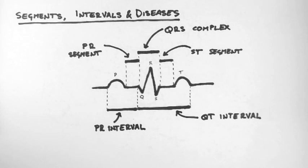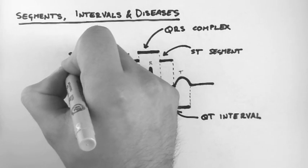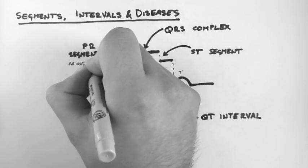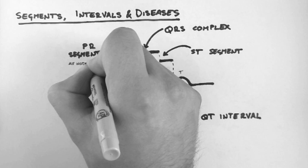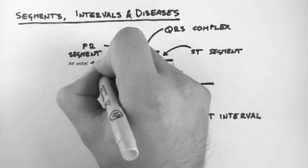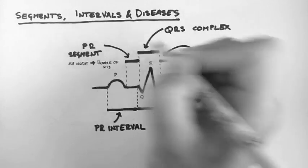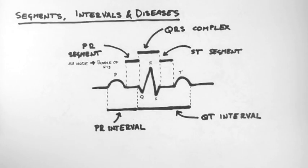So let's talk about each of these divisions. The PR segment is the segment between the end of the P wave and the beginning of the Q wave. It corresponds to the time the wave of depolarization takes to travel through the AV node and into the bundle of his. There aren't many common diseases associated with the PR segment, so we'll move right along.